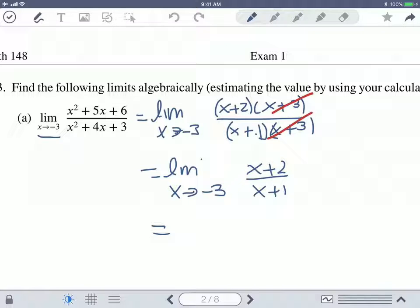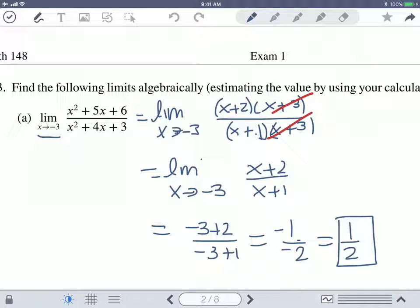If you plug in negative three, this gives you negative three plus two in the top, which is negative one, and then negative two in the bottom. So again, it's just one half positive. So the limit does exist and it's one half. That's how you solve this one.